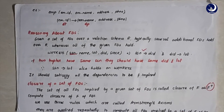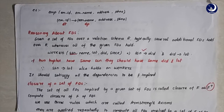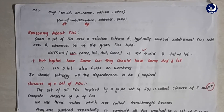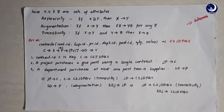To compute F+, we apply three rules called Armstrong Axioms repeatedly to compute all the FDs implied by a given set of functional dependencies. Let X, Y, and Z be sets of attributes of a given instance. The three rules are: reflexivity, augmentation, and transitivity.